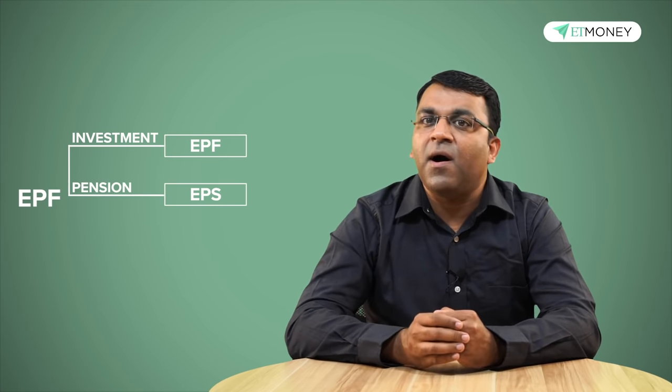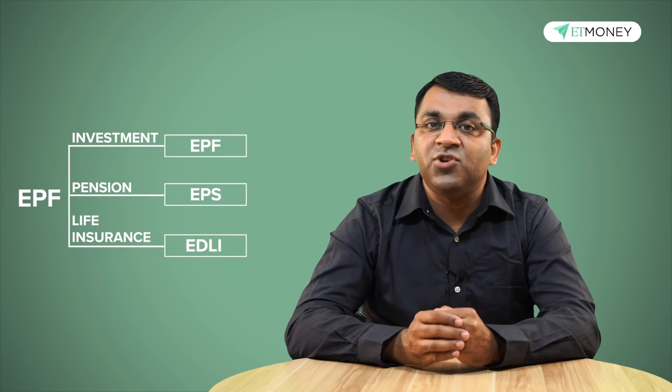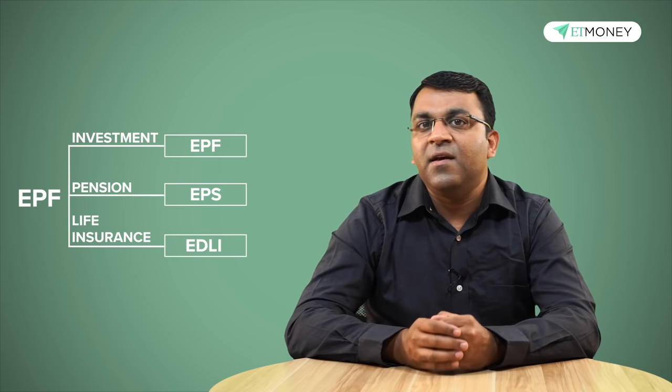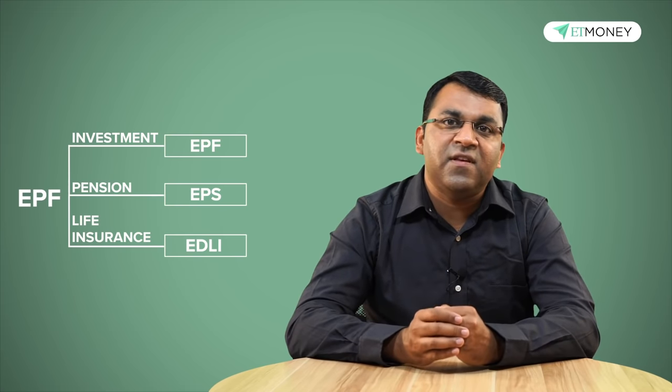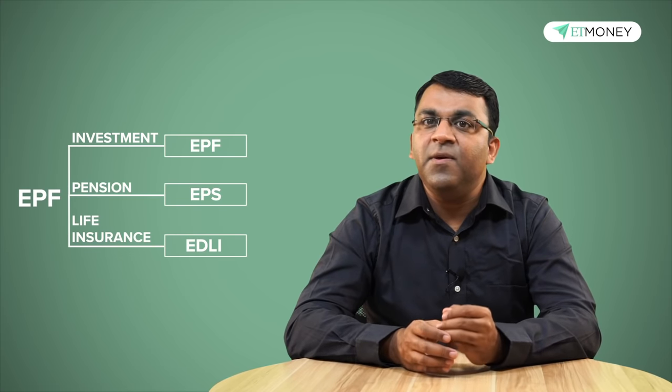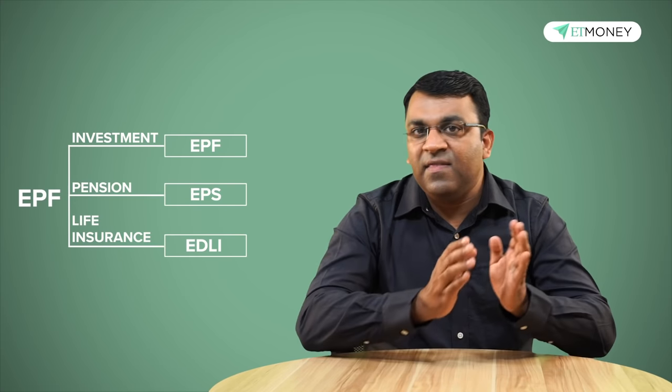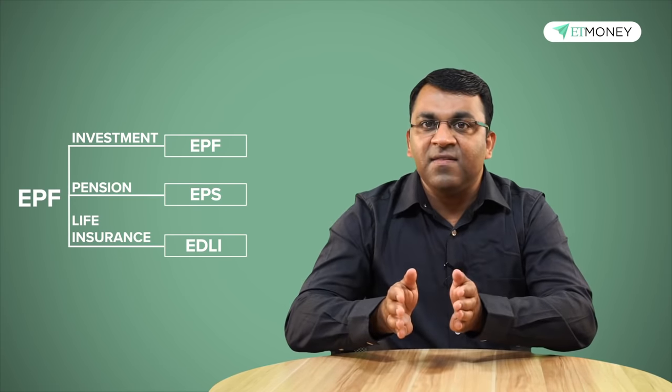The third and final part of EPF is the Employee Deposit Linked Insurance Scheme or EDLI, which is a life insurance cover provided to the member. So very simply, EPF consists of three parts: the EPF, the EPS and the EDLI. It's good to note here that one does not need to register separately for all three benefits — when you get registered to EPF, you're automatically registered for EPS and EDLI as well.